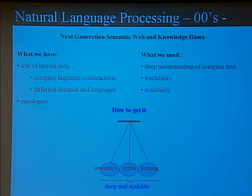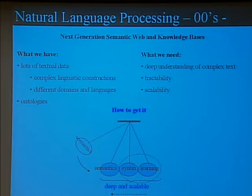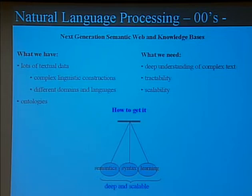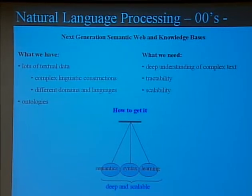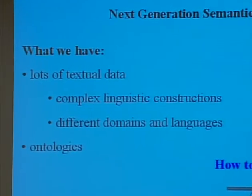How do we get there? By bringing together syntax, semantics, and learning into the same framework — making it both deep and scalable. There are two ways: one is to start from syntax and semantics and try to bring learning in; the other is to start from learning and shallower approaches and try to bring semantics in. In my thesis I started from the first direction, and in recent postdoc work on machine translation I've been going the other way. This talk is about building deeper language understanding models that capture syntax and semantics but are also learnable.